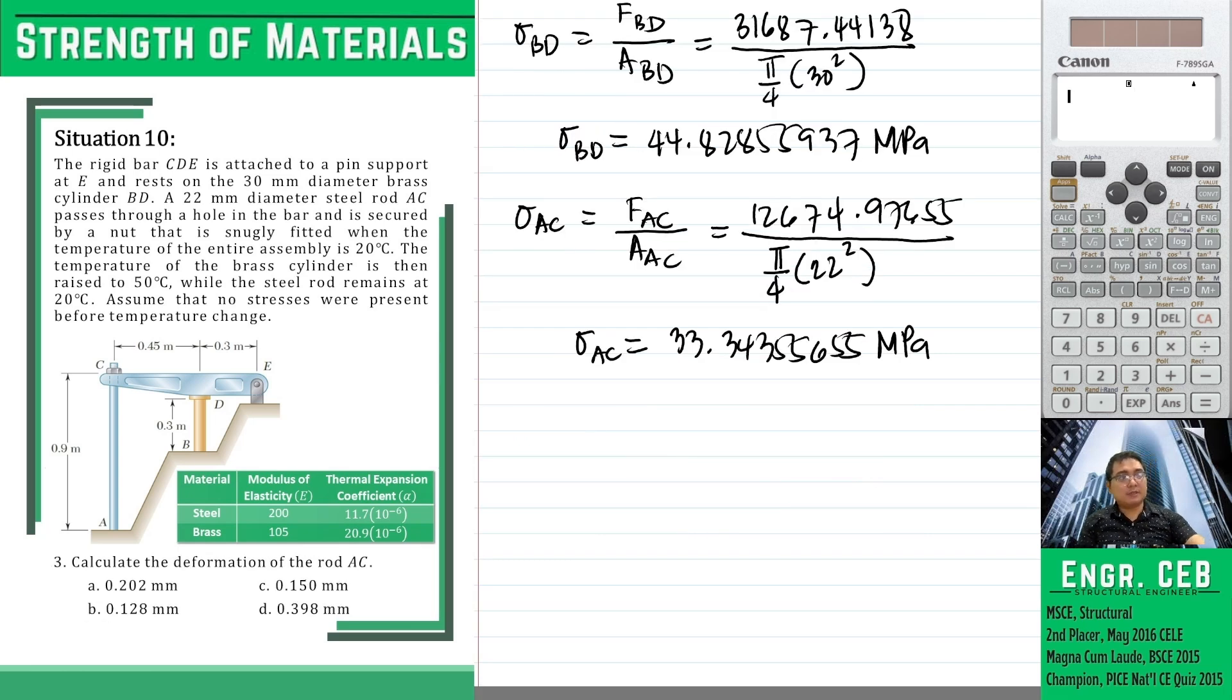Next problem, calculate the deformation of rod ac. So we just substitute in the formula f l over ae of rod ac. So we substitute the force in ac is 12,674.97655. The length is 900. The area is π over 4 times 22 squared.